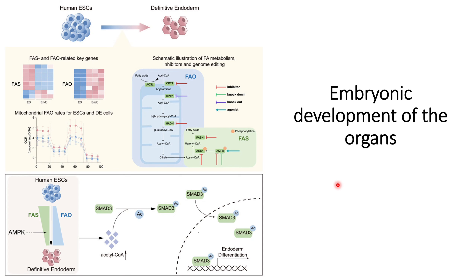Today we will discuss embryonic development at the initial stage that leads to the formation of organs. During embryonic development, one important thing that occurs is mechanistic changes — continuous reprogramming within the cells due to differentiation. One of those reprogramming events is related to fatty acid oxidation, which triggers the formation of the endoderm, one of the primary germ layers that helps in organ development.